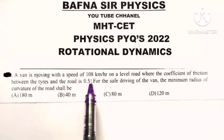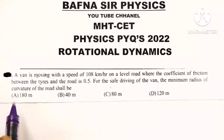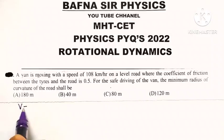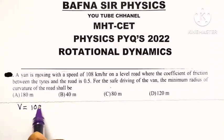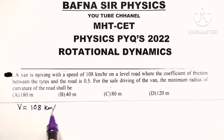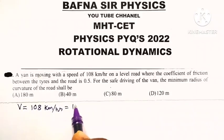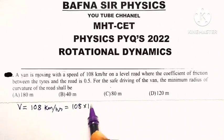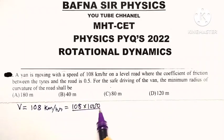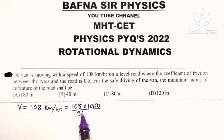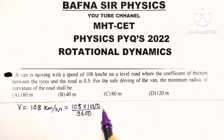A van is moving with a speed of 108 kilometer per hour. V equals 108 km/hr. Converting it into meter per second: 108 times 1000 meters divided by 3600 seconds.